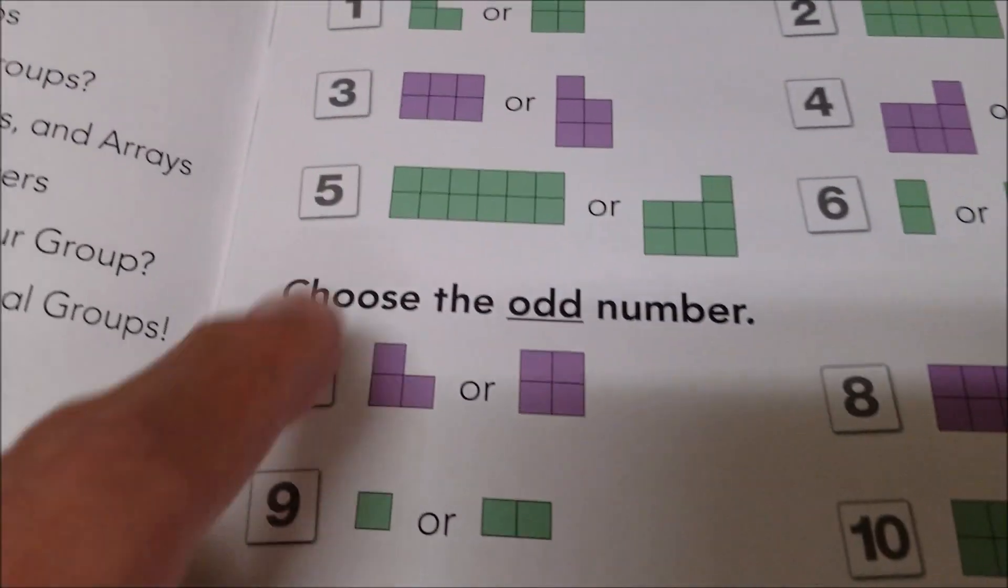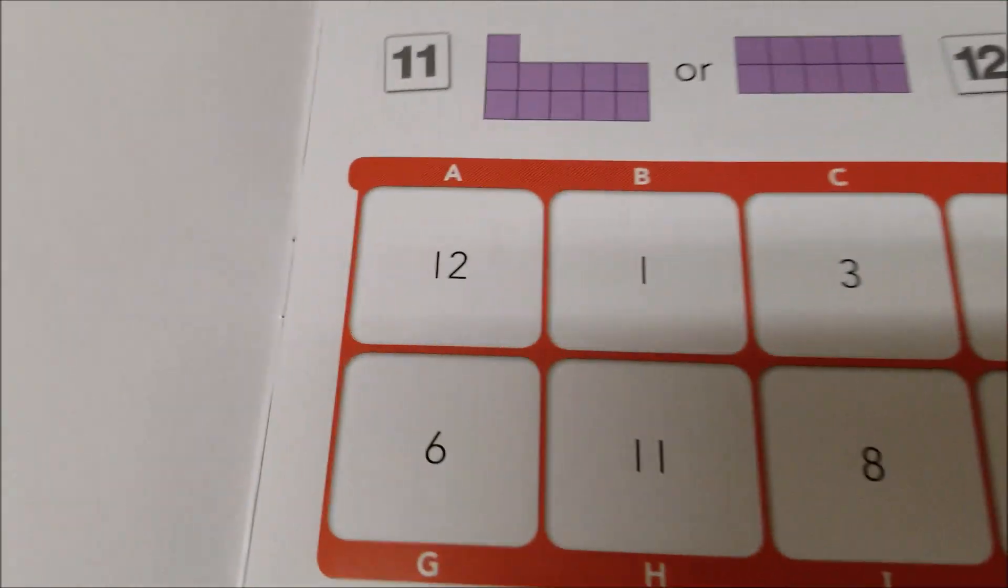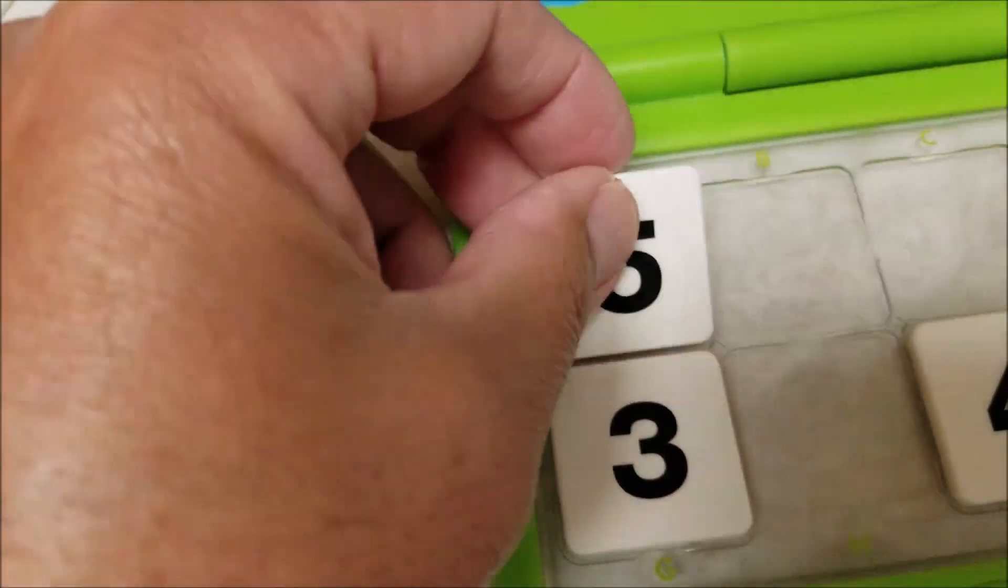Number five is two, four, six, eight, ten, twelve. So I'm looking for twelve, and that's going to go into the A spot.